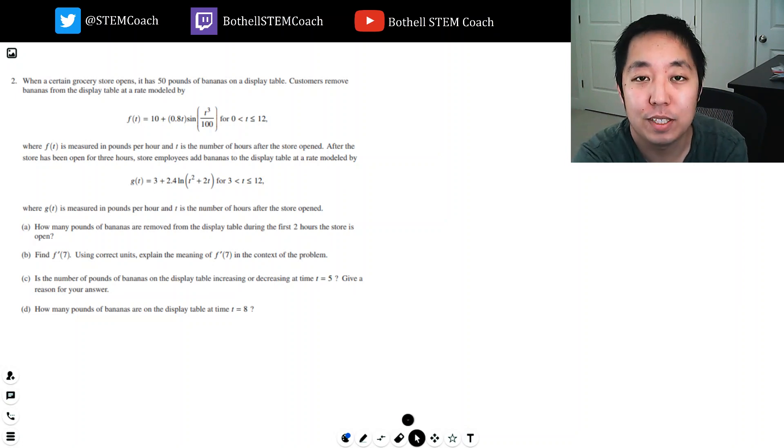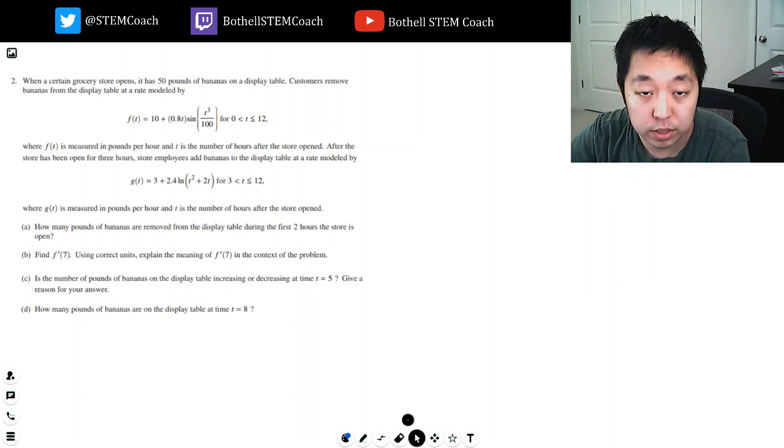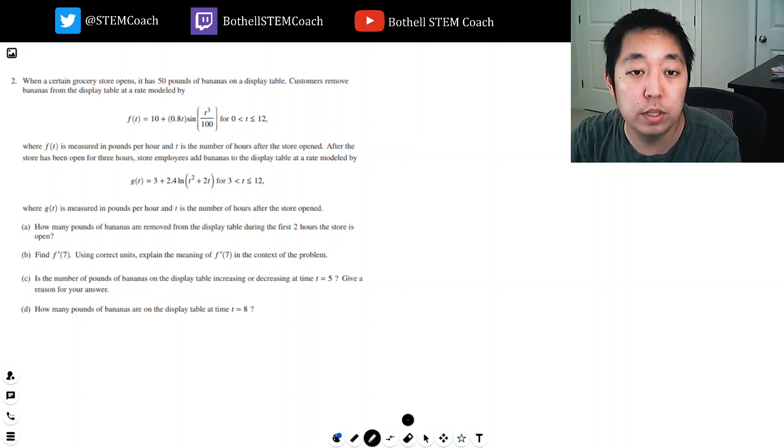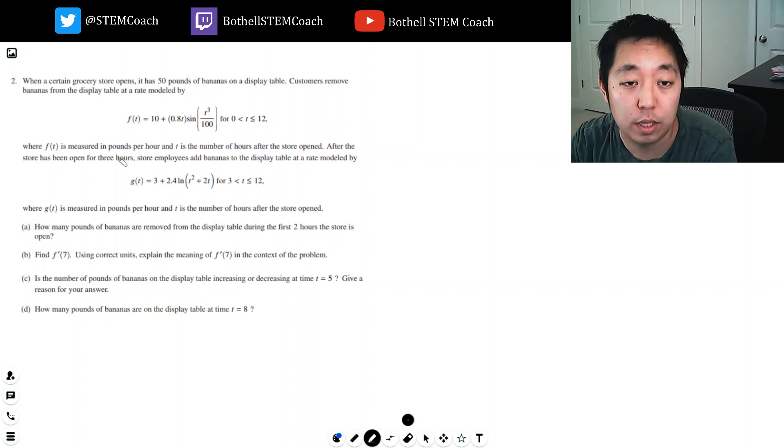Hey guys, this is Alan with Bothell STEM Coach, and today we're going to be continuing the AP Calculus 2017 free response questions. Let's get right into it. This is number two. When a certain grocery store opens, it has 50 pounds of bananas on a display table. Customers remove bananas from the display table at a rate modeled by f(t), measured in pounds per hour. Store employees add bananas to the display at a rate modeled by g(t). So f and g are rates, they're pounds per hour, not pounds total.